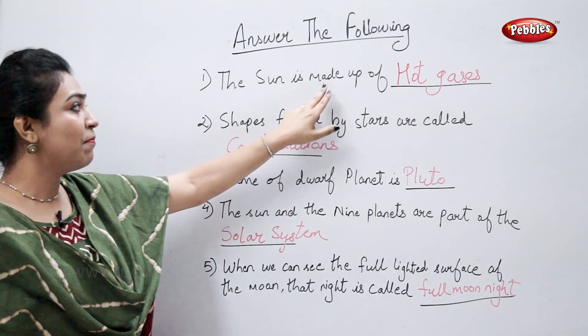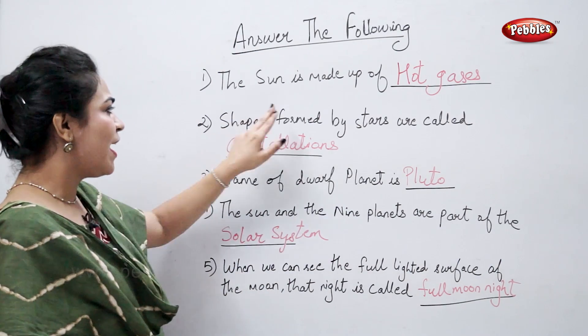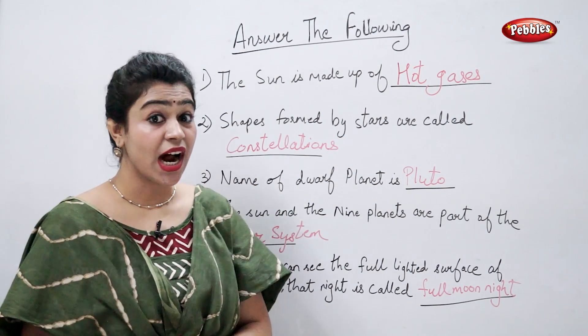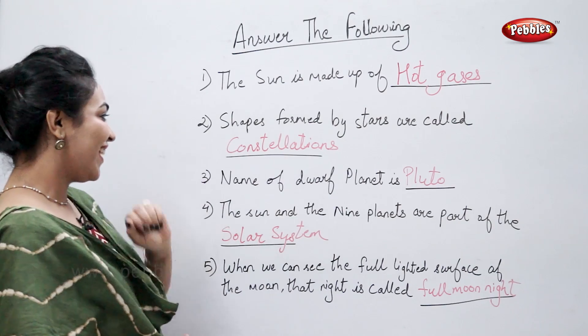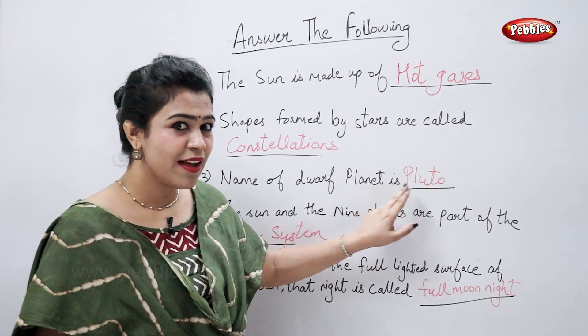The sun is made up of hot gases. Shapes formed by stars are called constellations. Name of the dwarf planet is Pluto.